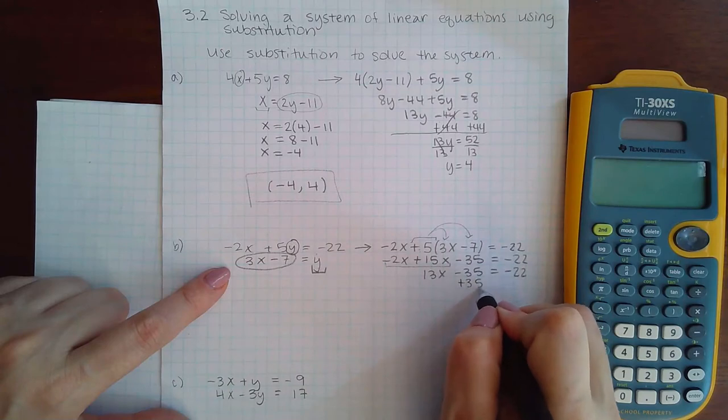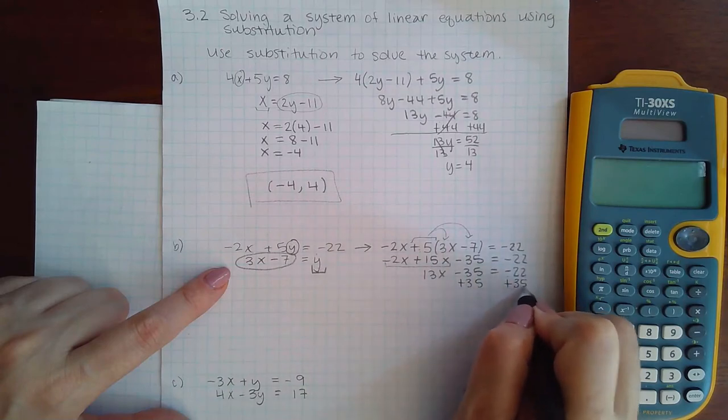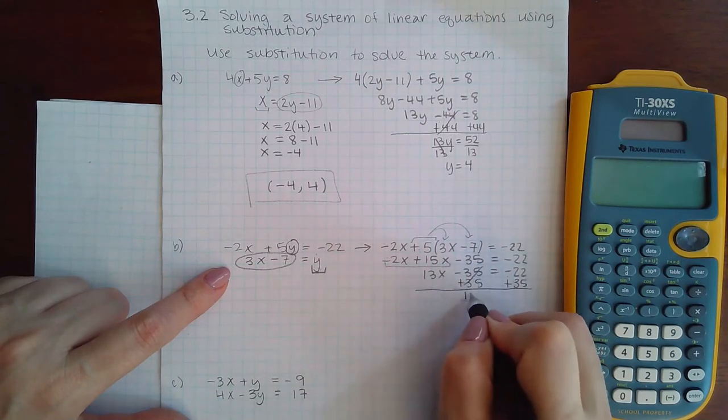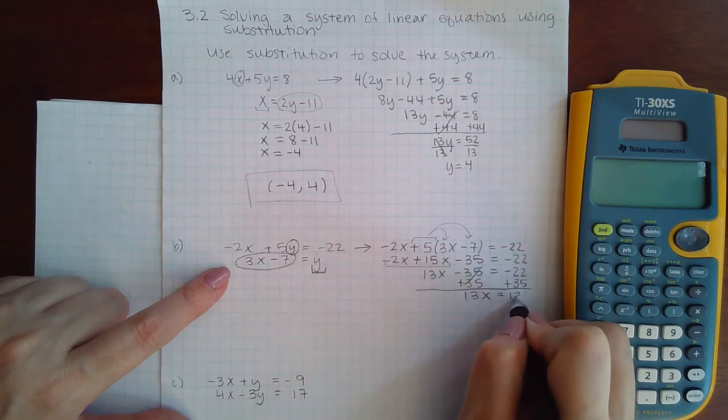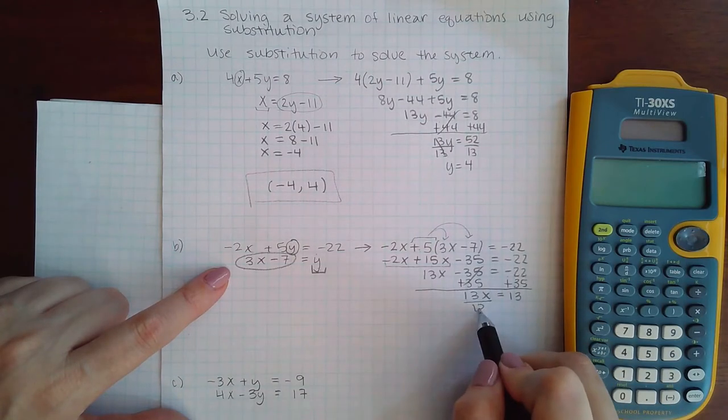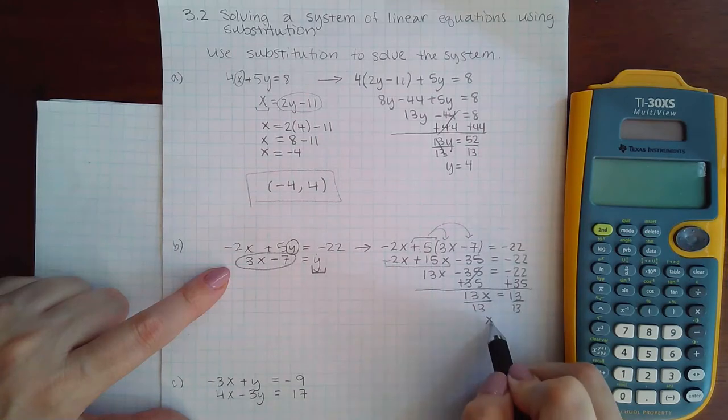And then if I add 35, I get 13x equals 13. And then if I divide by 13, I get x equals 1.